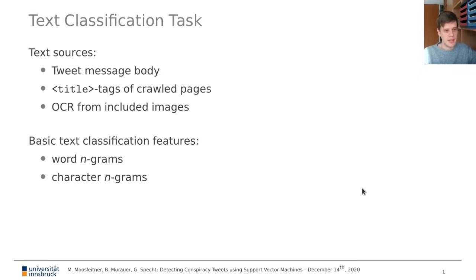As a third source of text we also extracted any text from the images that were included in the tweets using optical character recognition. From these texts we then extracted basic text classification features like word and character n-grams.